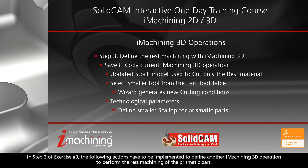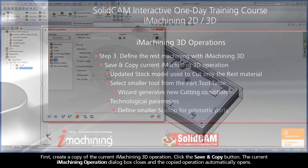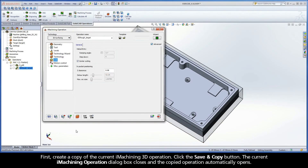In step 3 of exercise number 9, the following actions have to be implemented to define another iMachining 3D operation to perform the rest machining of the prismatic part. First, create a copy of the current iMachining 3D operation.